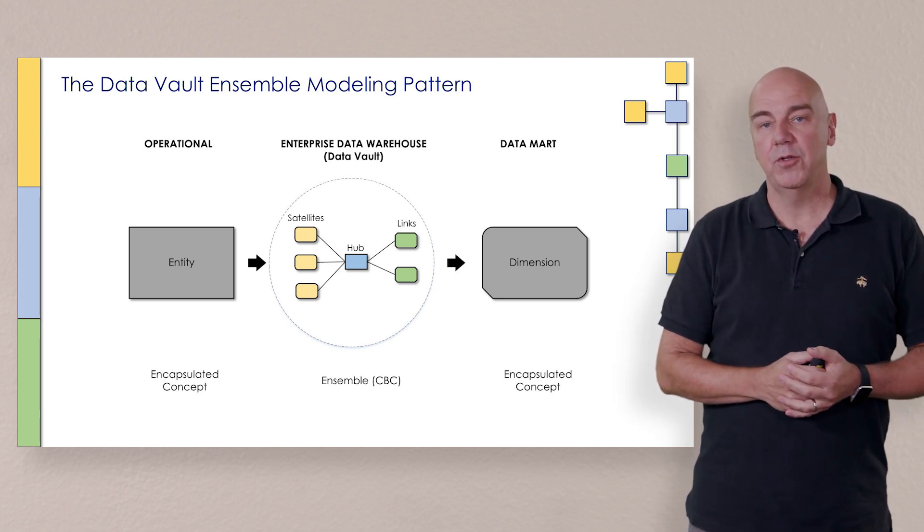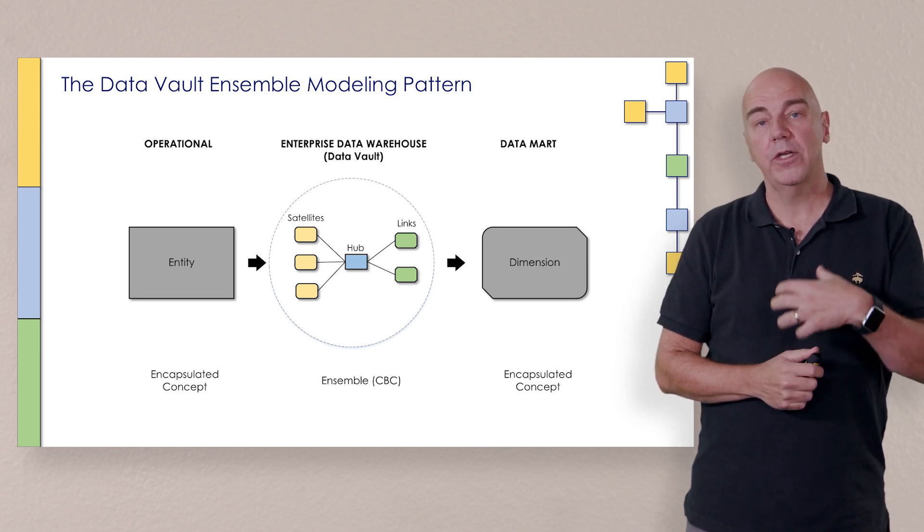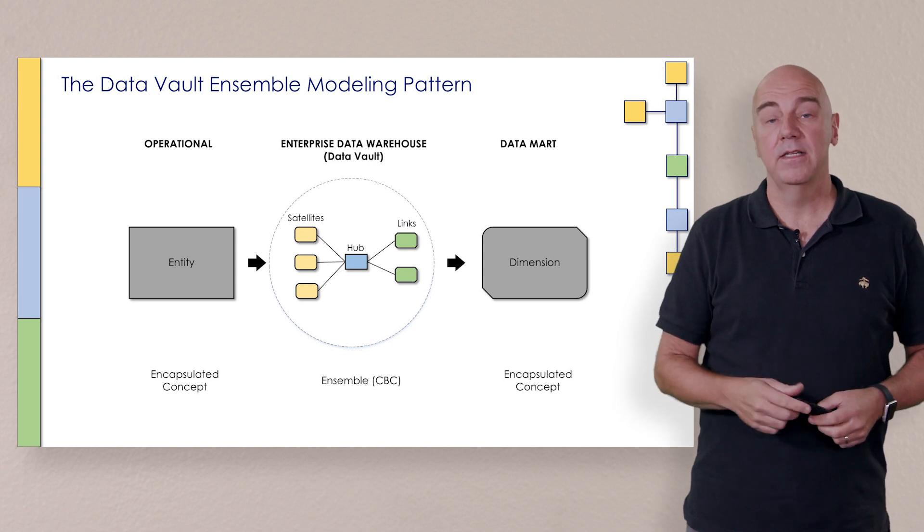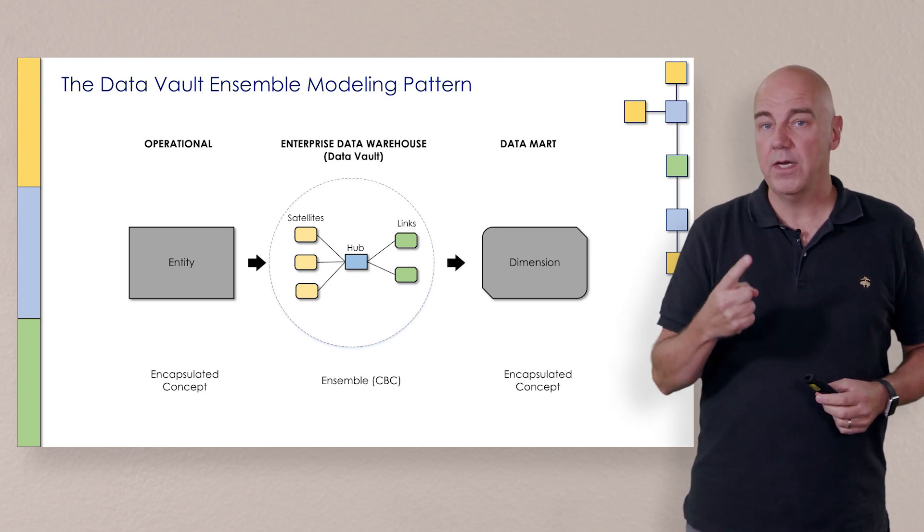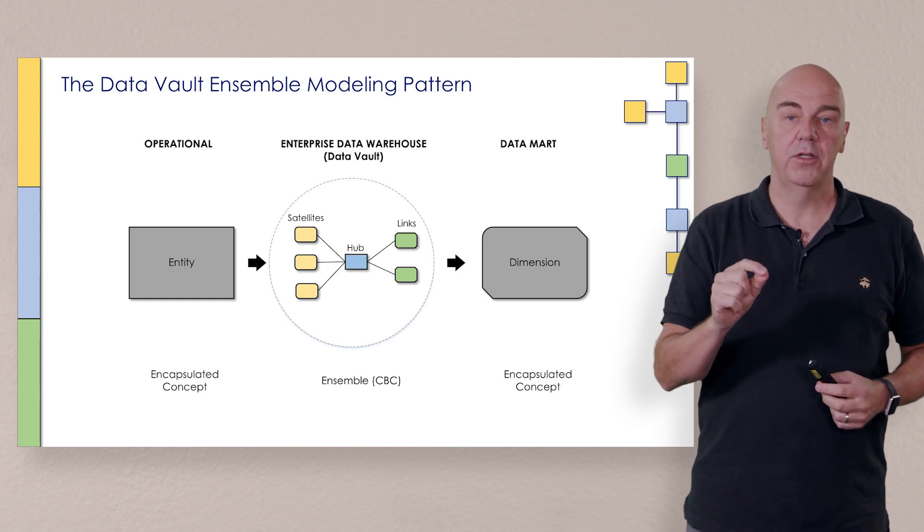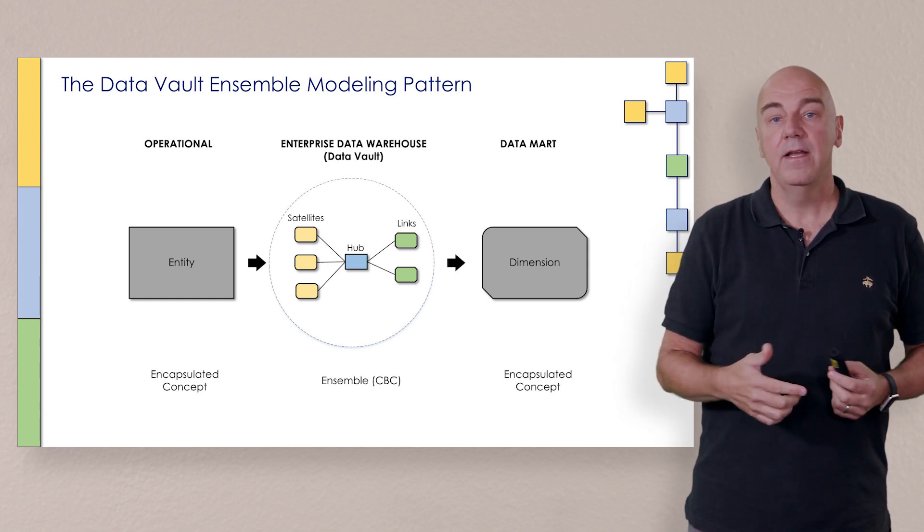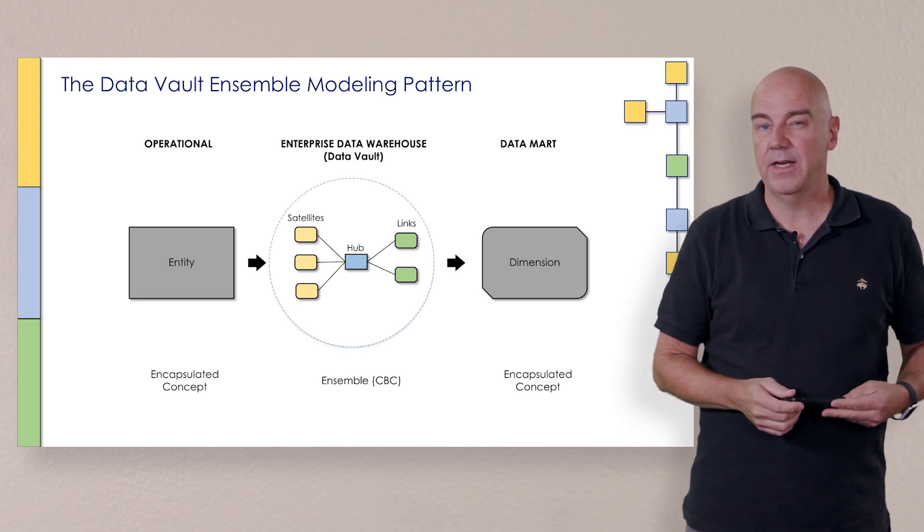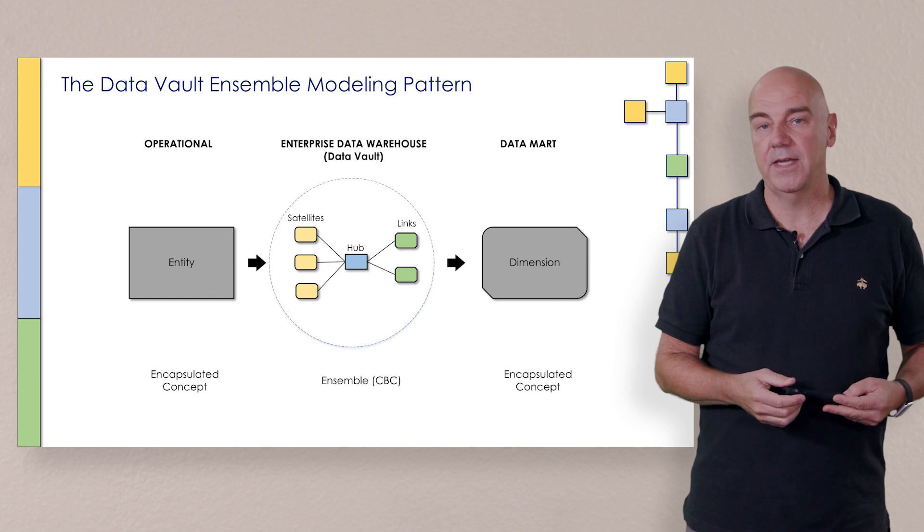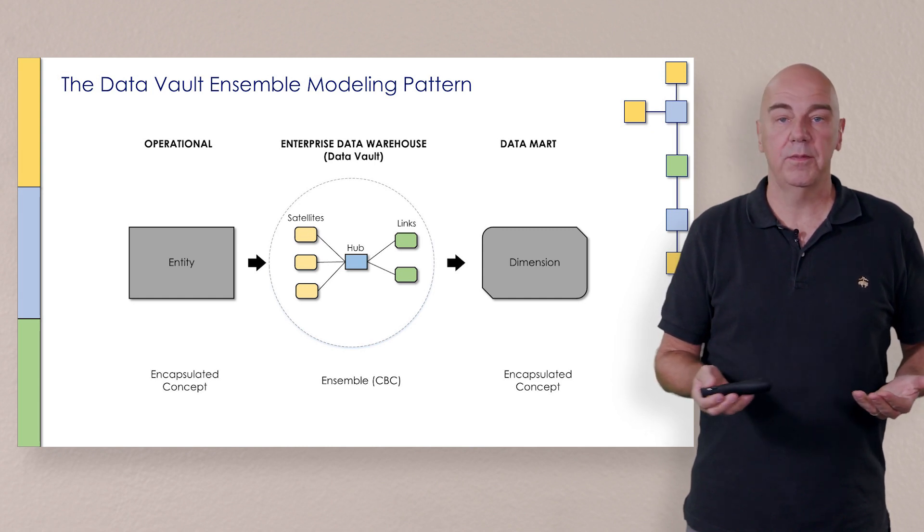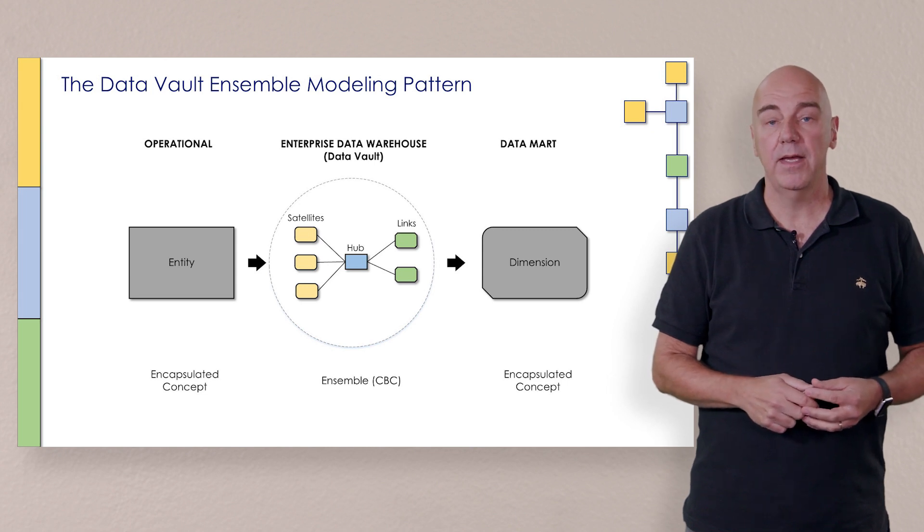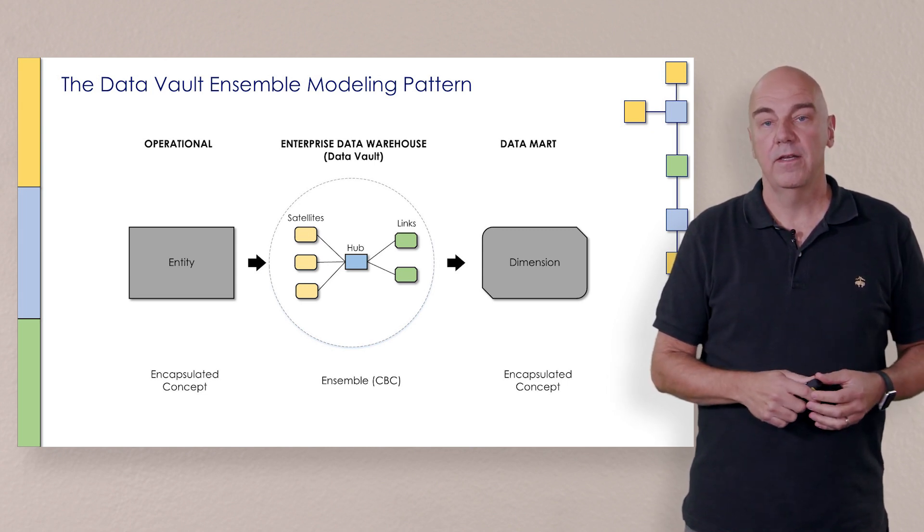When we work with the data vault ensemble, we have working together as a collective the hub, the links, and the satellites. There's always just going to be the one hub because that's the instance of one record for one of those core business concepts. Then there could be three to seven satellites on average, but it might be 25 depending on what the business case is. And when it comes to links, they're just however they're related to anything else in the model, will come up through a link in most cases.